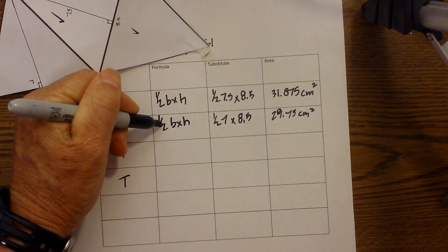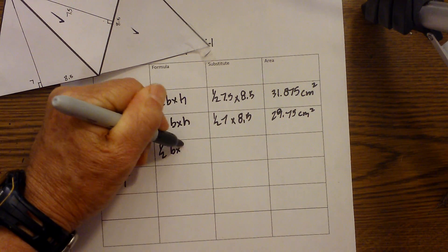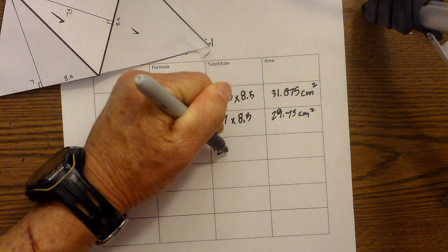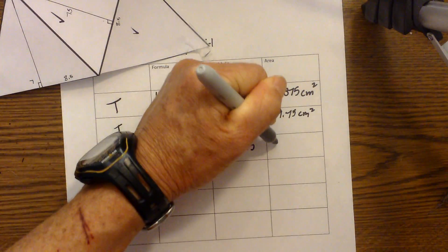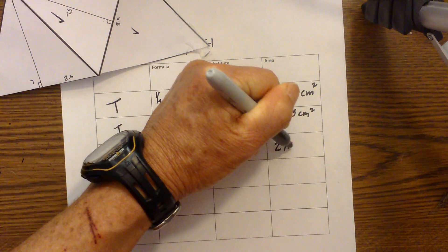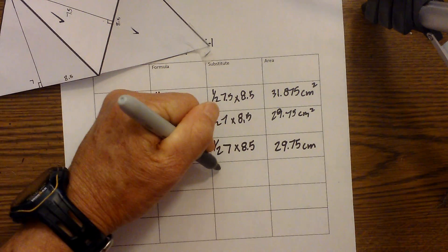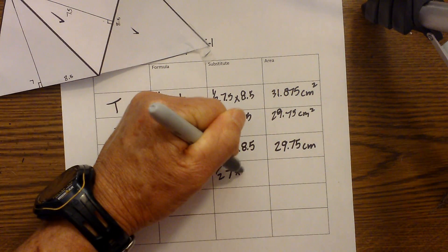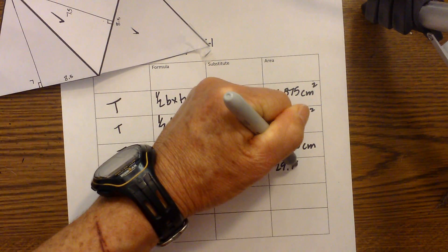So I'm going to go one half base times height. I'm going to substitute one half times 7 times 8.5, and that's 29.75 centimeters squared. And I'll have one more of these: one half, 7 times 8.5, is 29.75 centimeters.